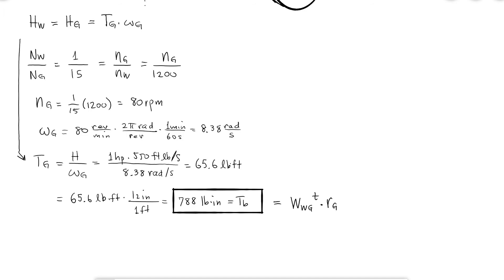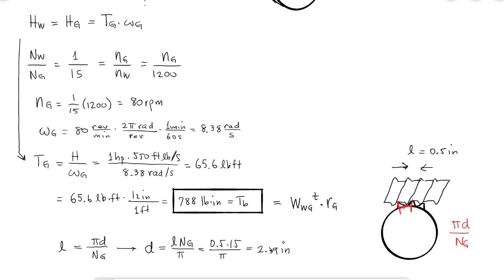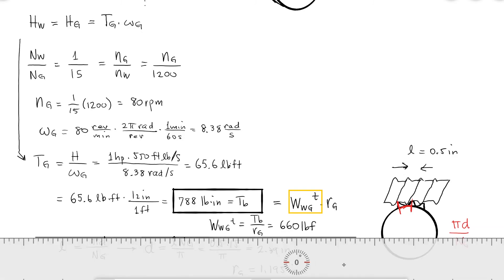The distance between teeth must equal the lead of the worm threads, which was given. The distance between teeth is the circular pitch, which is just the circumference divided by the number of teeth. From this equality, I find the diameter is 2.39 inches, giving a radius of 1.195 inches. This radius, together with the torque found earlier, allows me to calculate the tangential component of the force.